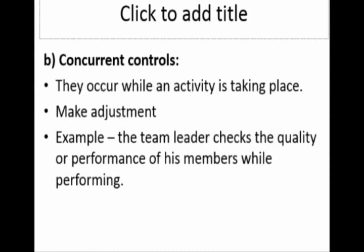An example is given here: a team leader checks the quality or performance of his members while they are performing. In this case, the team leader ensures whether his subordinate is able to perform the task as he carries it out. If he finds his subordinates struggling with their performance, he can take alternative measures or add additional subordinates to work on that particular task so that it will be completed as planned and per the standards. Concurrent control is having control over the activity during that particular operation or event.